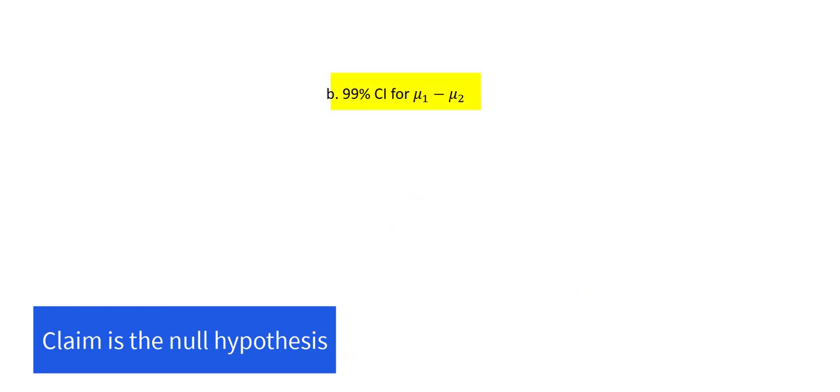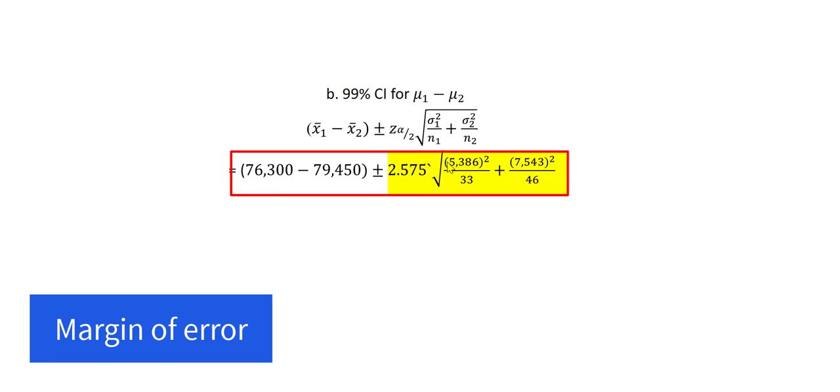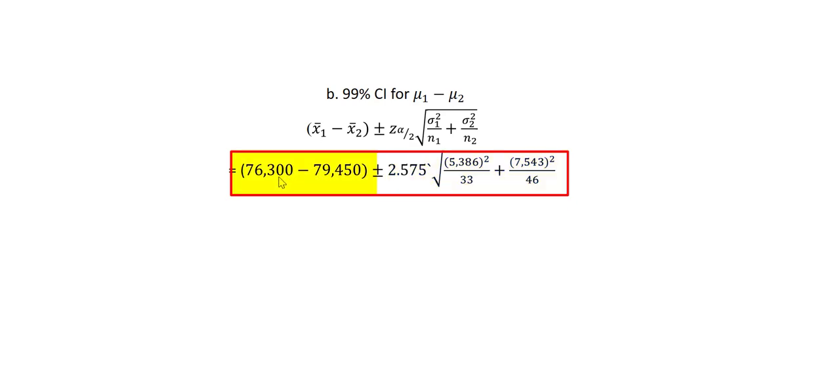Next, we compute the 99% confidence interval for mu1 minus mu2. We use this formula right here. All of these values have been given from the table earlier on. The critical value again on one tail is 2.575. Once we put in all our values in here, the product here, the value we have on the right side here, is referred to as the margin of error. And in here, we have the difference between the sample means.